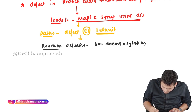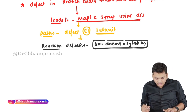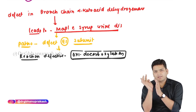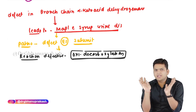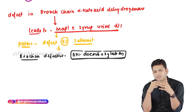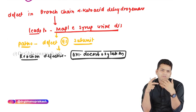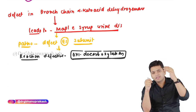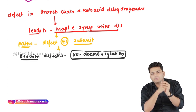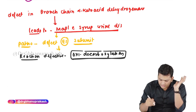If they ask which reaction is defective in Maple Syrup Urine Disease, it is not dehydrogenation — despite the enzyme's name. The defective reaction is oxidative decarboxylation, because E1 is the culprit subunit, and E1 performs decarboxylation.